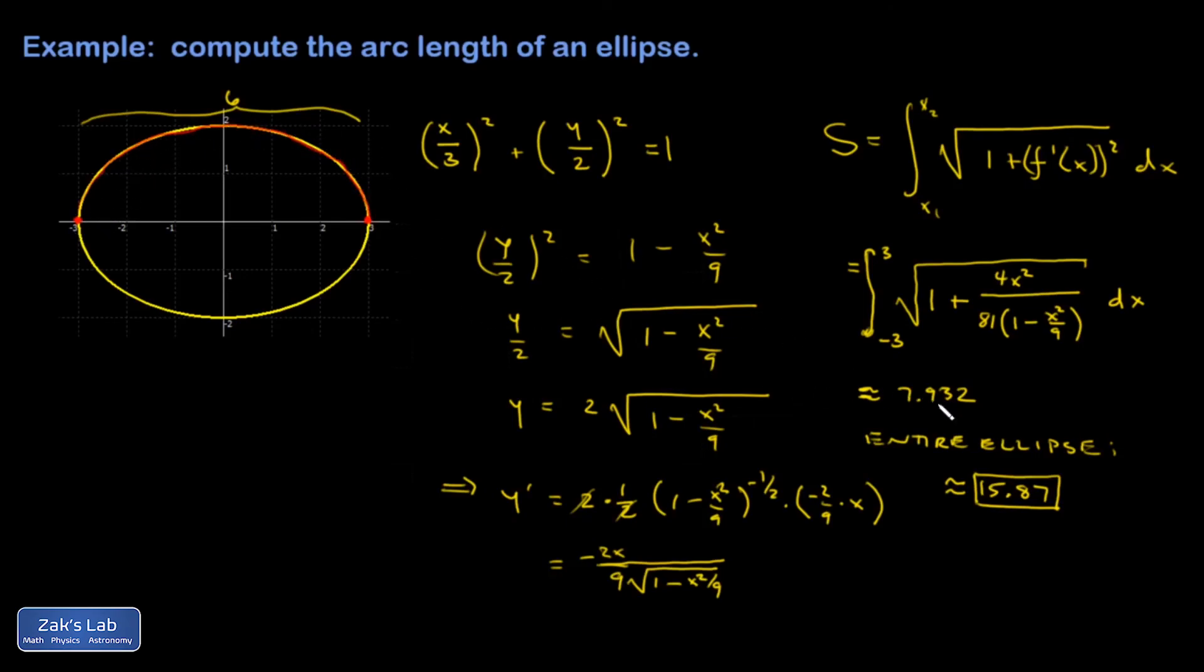I know that's 7.9-ish. But a straight line would be 6. And this is definitely a little bigger than that. Another 6 down here, but a little bigger than that. So is it plausible that the arc length is a little bigger than 15? Yeah, it looks about right.